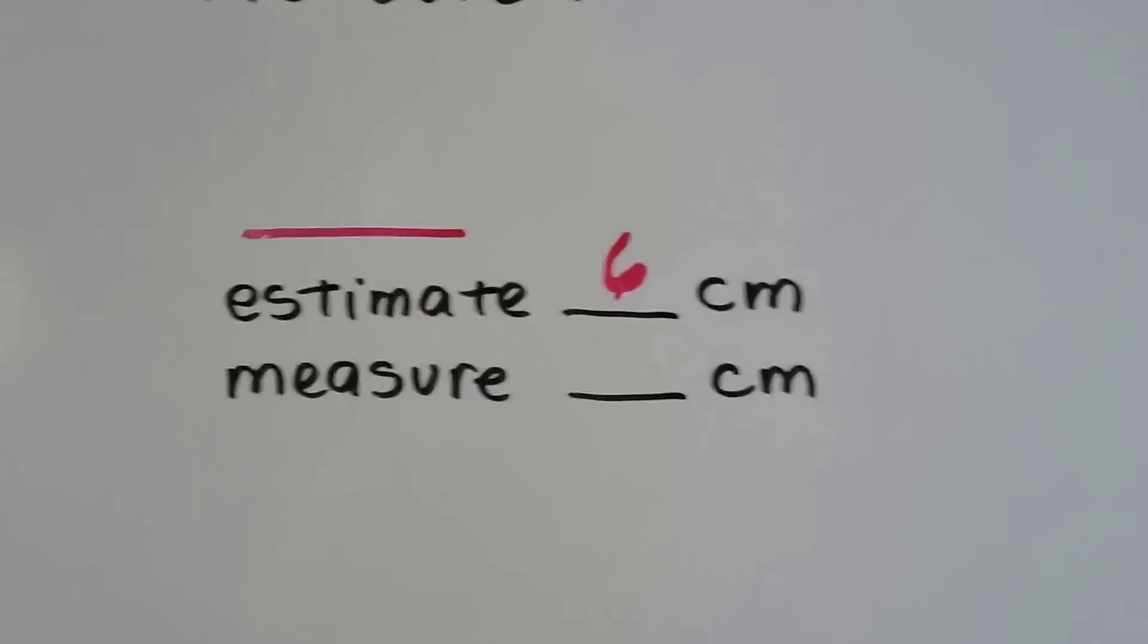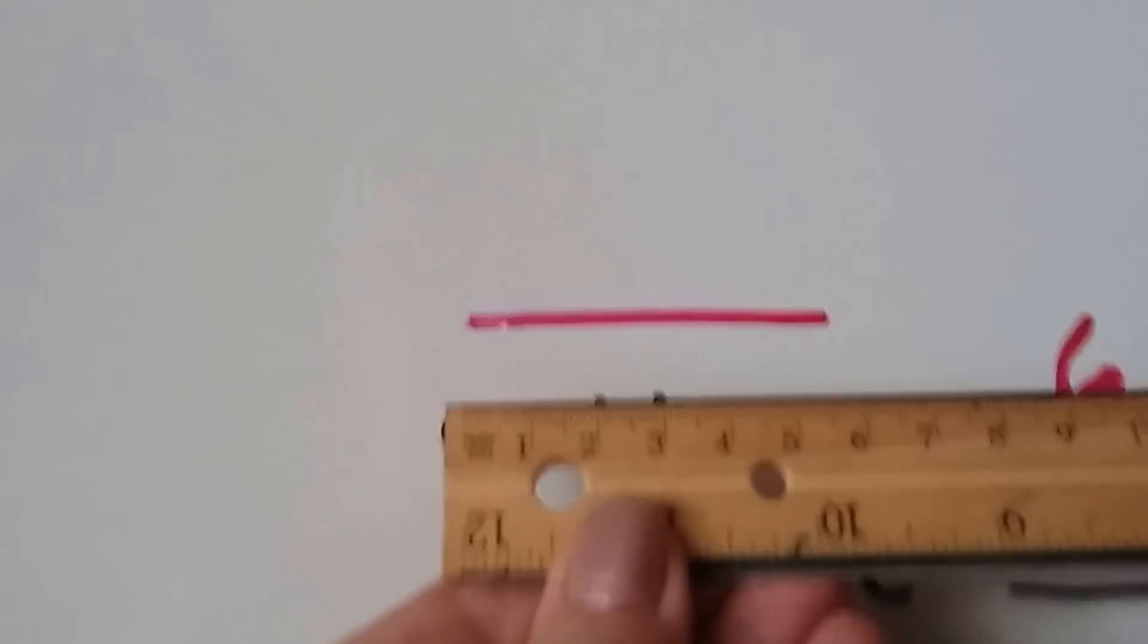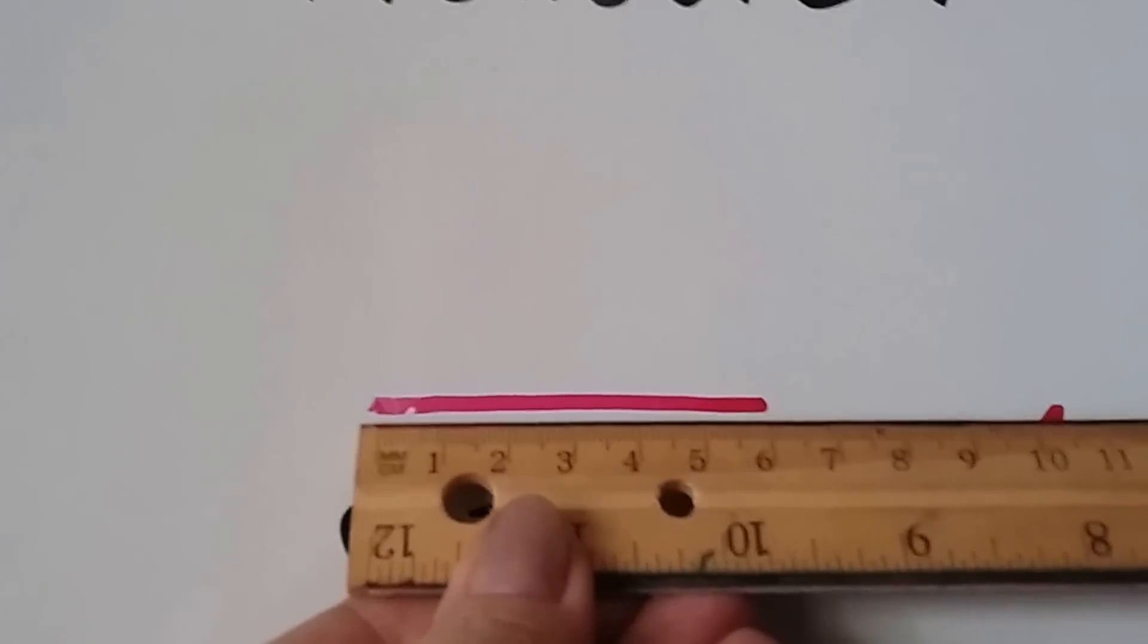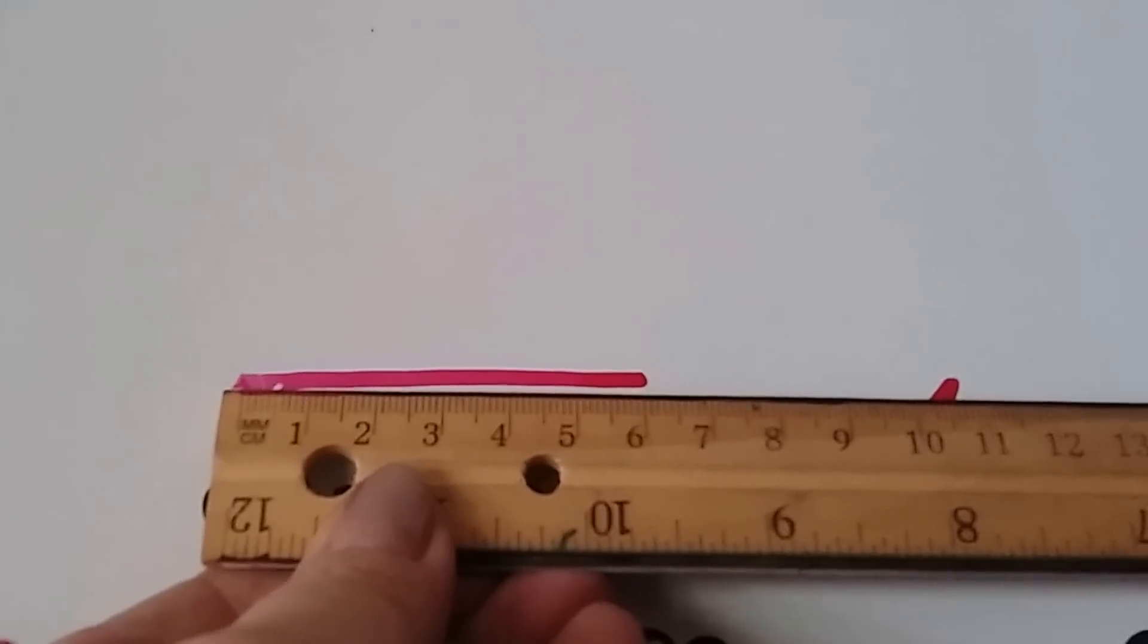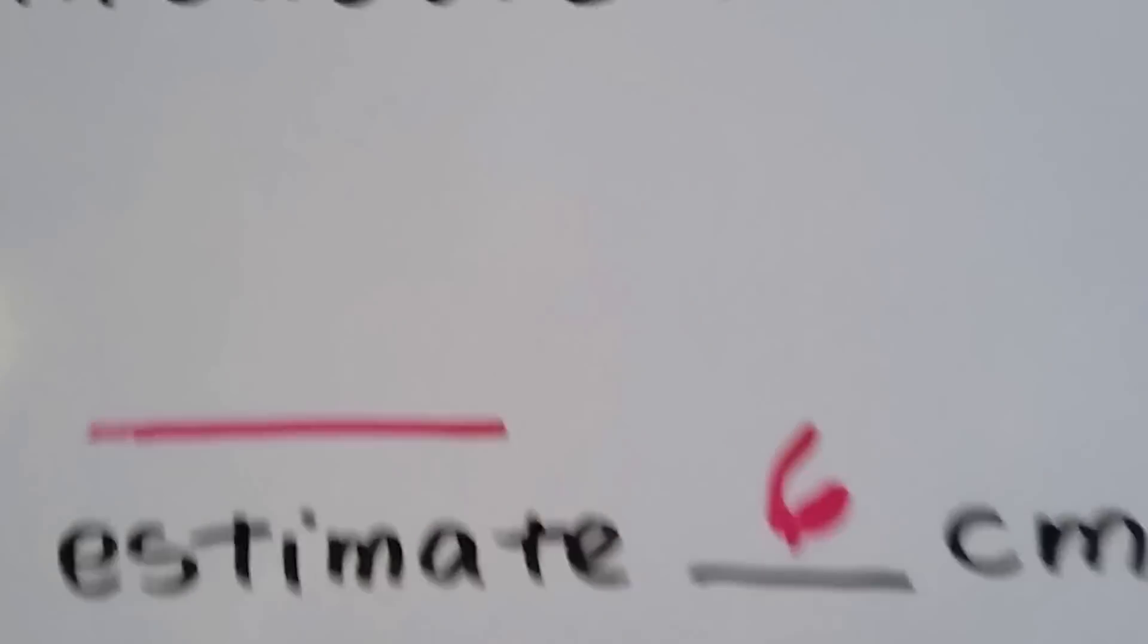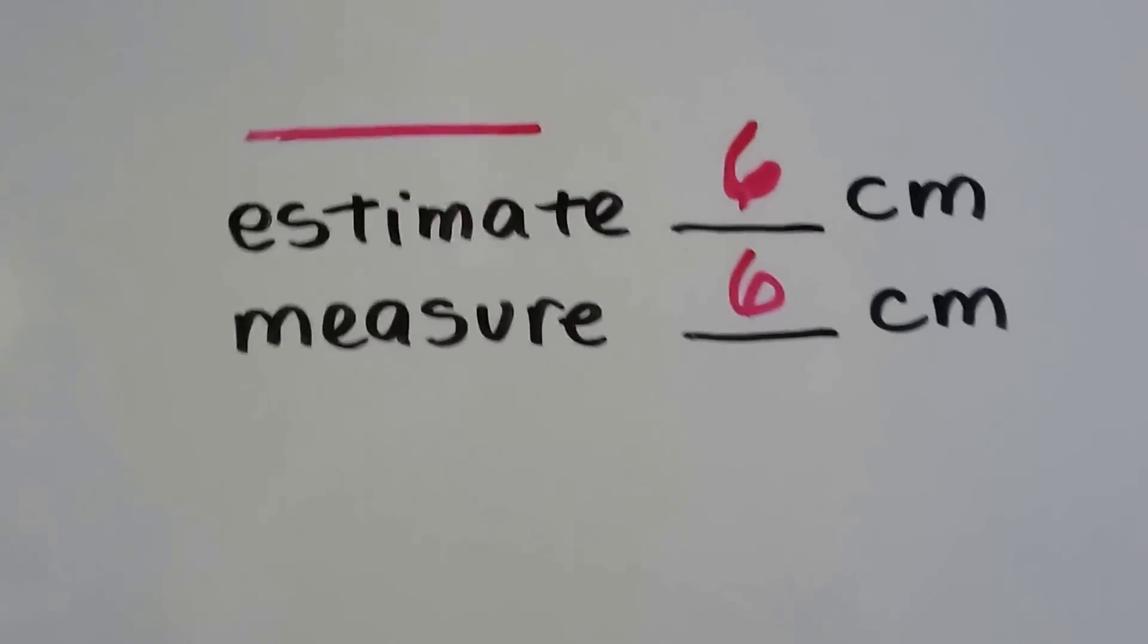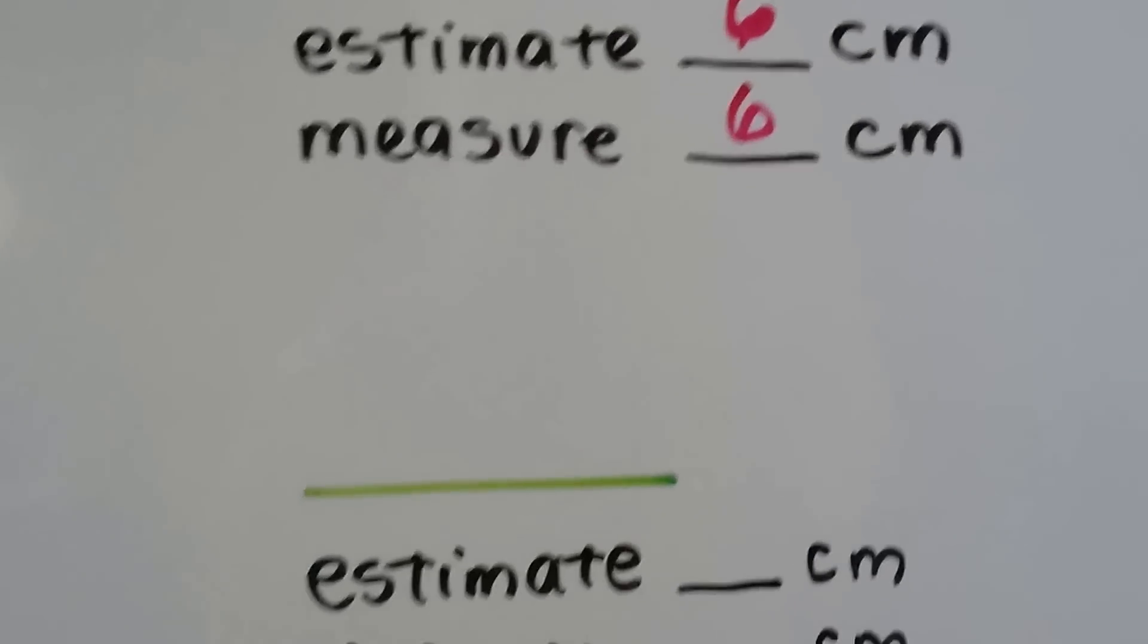Now let's measure it for real. I'm going to get my ruler and hold it up here. Look at that. It's right on the sixth. The pink line ends right on the sixth there, so it was six centimeters. Good guess. It helps that I'm the one that drew it too though.